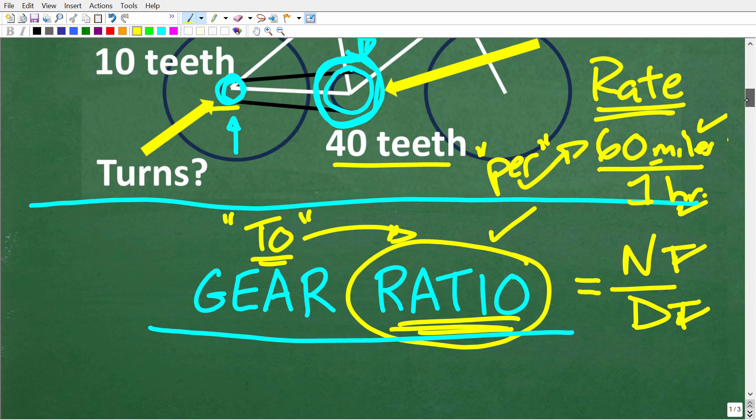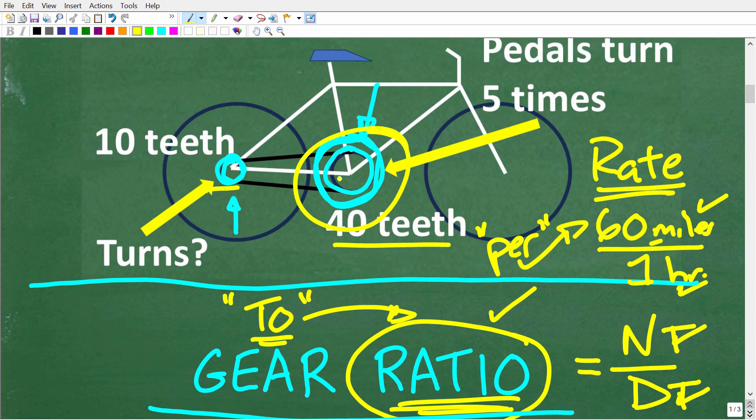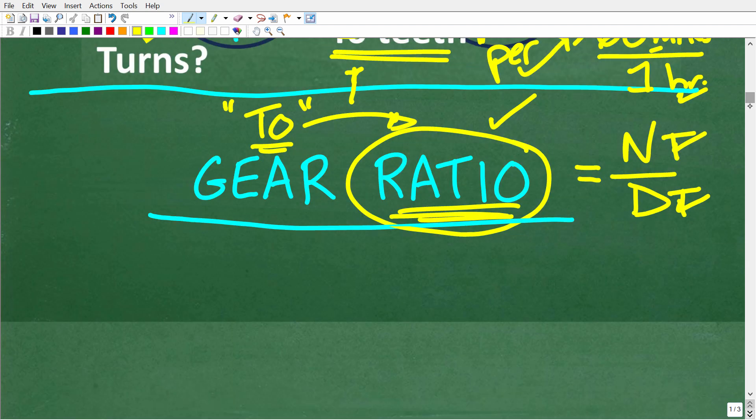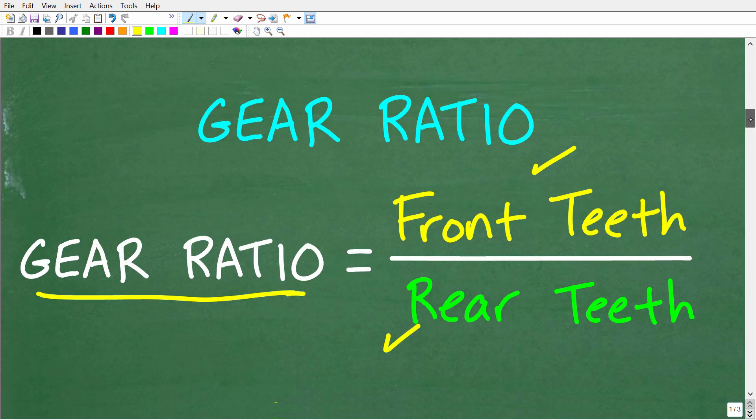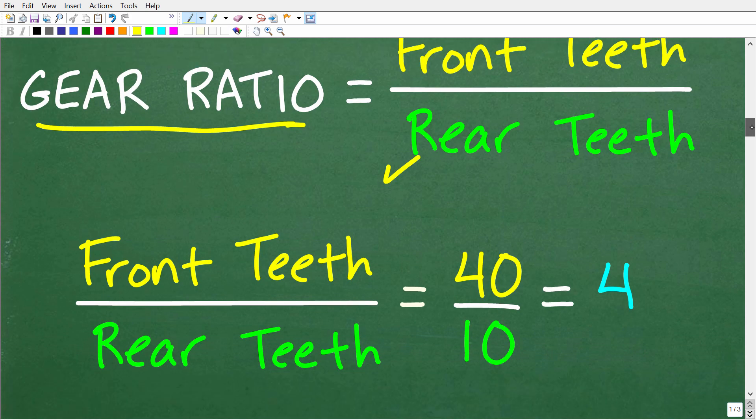So, that means we have to go back up here and say, oh, okay, that front gear has 40 teeth and that rear gear has 10 teeth. So, this is how we're going to calculate the gear ratio. So, it's a real simple comparison. So, we have the front teeth over the rear teeth. So, that's going to be 40 to 10. So, the gear ratio here is 4.